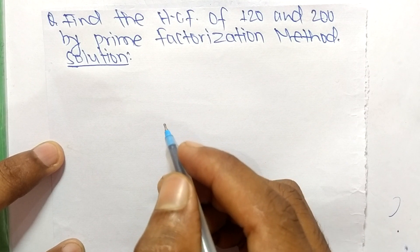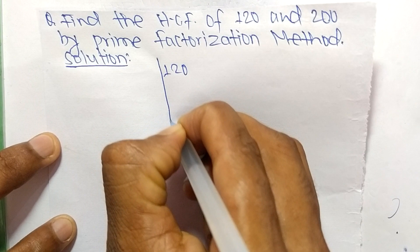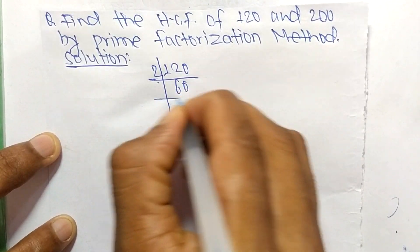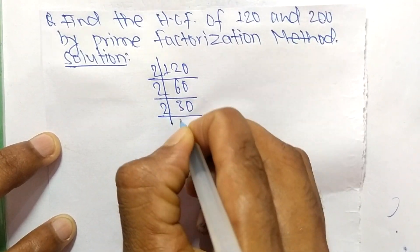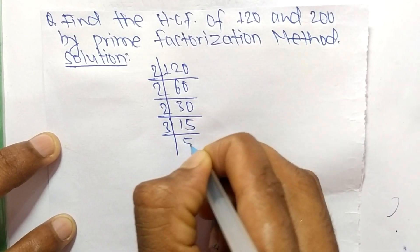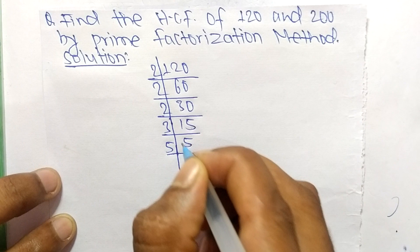So first we find out the prime factors of 120. It is 2 times 60 equals 120, 2 times 30 equals 60, 2 times 15 equals 30, 3 times 5 equals 15, and 5 times 1 equals 5.